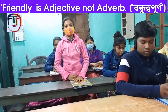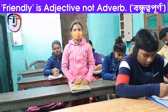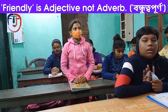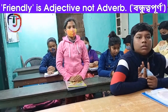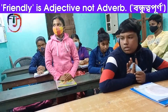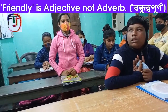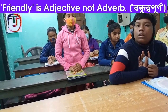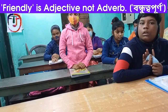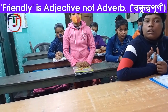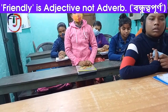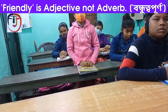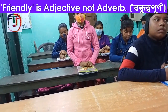Pradipta, you stand up and tell another sentence with the word 'friendly.' Quick. My mother friendly with... No, this is not right. You have omitted the verb. Without a verb, no sentence can be formed — it should be 'My mother is friendly with...' You have not told any verb. So take your seat.